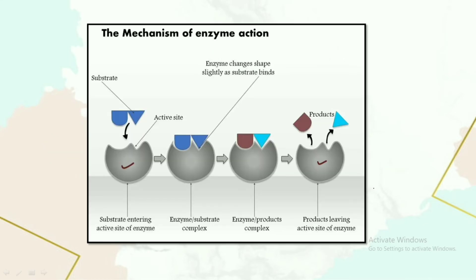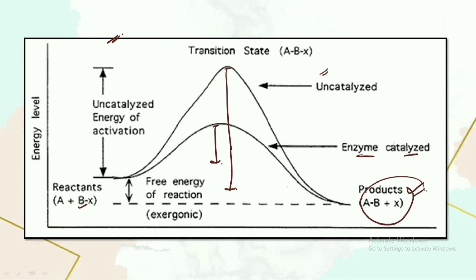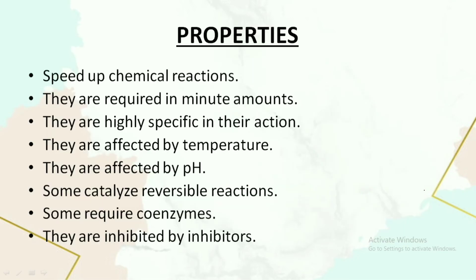In another representation, consider reactants A and B. In the uncatalyzed reaction where the enzyme is absent, more activation energy is used. But if the enzyme is present, less activation energy is used and products are formed.